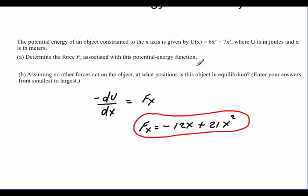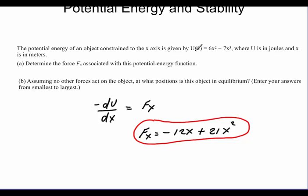Well, to find equilibrium, we're going to take the derivative of our potential energy. Again, do not use the negative and don't start taking the derivative of this. Come right back to this. We will take the derivative of that. That will give me u is equal to, again, 12x minus 21x squared.